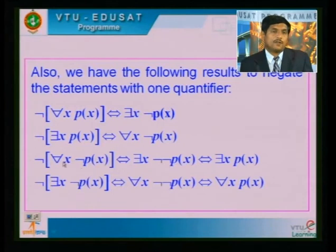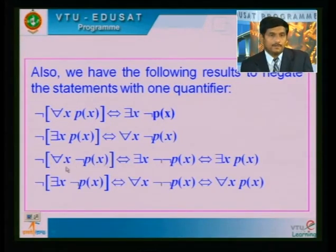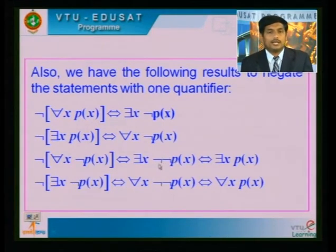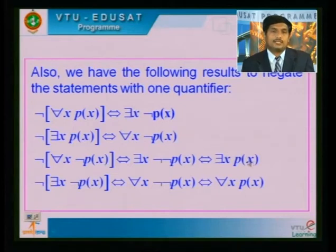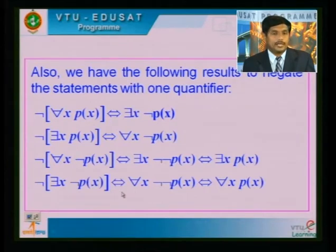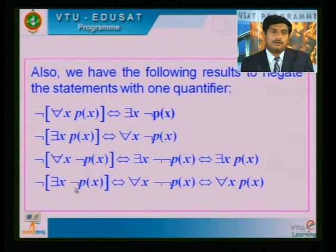Also, we have the following results to negate statements with one quantifier: ¬(∀x P(x)) if and only if ∃x ¬P(x) — 'for all' becomes 'there exists'. ¬(∃x P(x)) becomes ∀x ¬P(x). Similarly, ¬(∀x ¬P(x)) becomes ∃x ¬¬P(x), and the double negation cancels to give P(x). Similarly, ¬(∃x ¬P(x)) if and only if ∀x P(x) — the double negation cancels and 'there exists' becomes 'for all'.